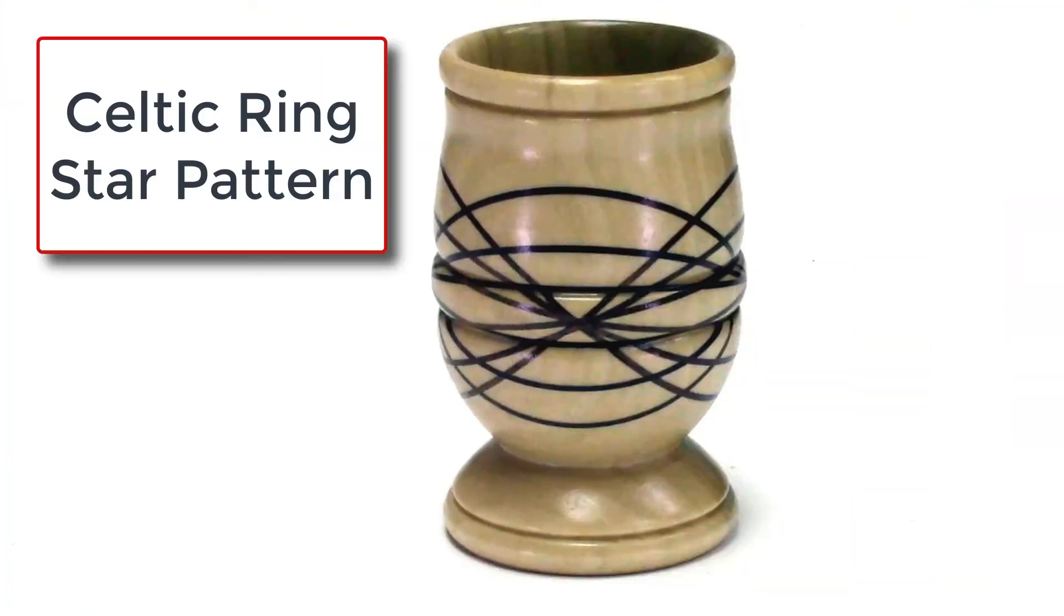Using the bandsaw laser, I was able to perfectly align all the angle cuts on the board so that they all intersected exactly in the middle of the board as planned. After gluing in the walnut inserts and turning on the lathe, this is the finished Celtic ring project.